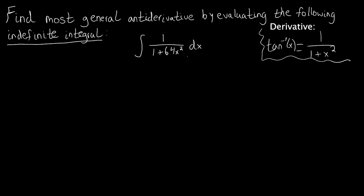So I ask: is there a way we can get this expression — this 1 plus whatever — to look like something squared, so we can plug it into tangent inverse as its argument? We need a number that, when squared, gives us 64. Well, 8 squared gives us 64. So what we can write this integral as is 1 over 1 plus 8 squared x squared dx. By properties of exponents, we can combine the 8 and x inside the same parentheses and raise that product to the power of 2.